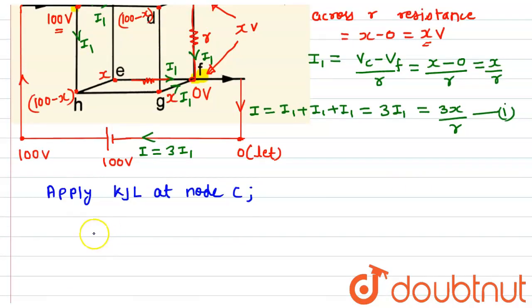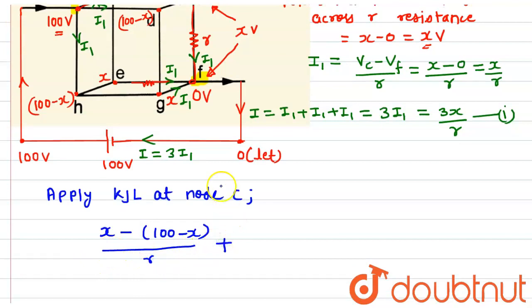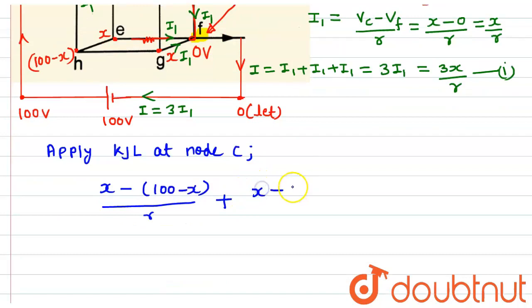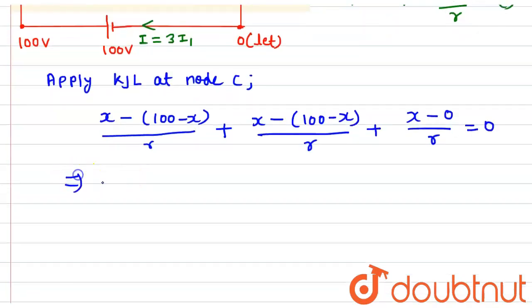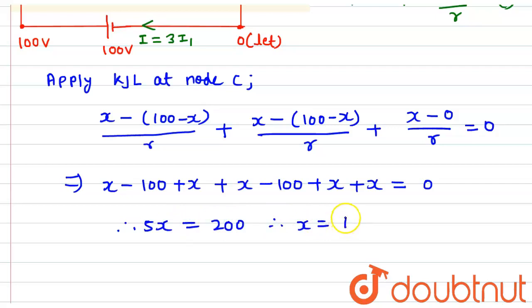By Kirchhoff's junction law, the sum of currents equals zero. We can write: (x minus (100 minus x)) upon R, plus (x minus (100 minus x)) upon R, plus (x minus 0) upon R equals 0. Simplifying: 2x minus 100 plus 2x minus 100 plus x equals 0, which gives 5x equals 200. So x equals 200 upon 5, that is 40 volt.